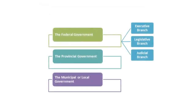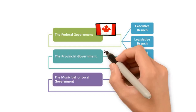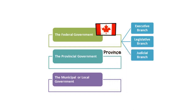To simply break down Canada's government, we can look at three main levels: Federal, whereby the government deals with Canada-wide or national issues; Provincial, which only constitutes that of said province; or Municipal, the laws of a city and/or town.